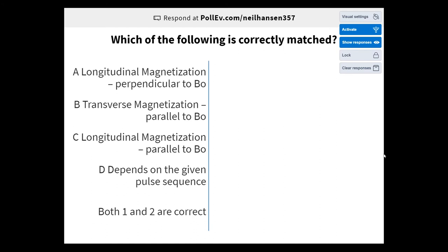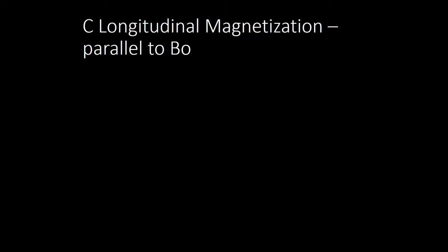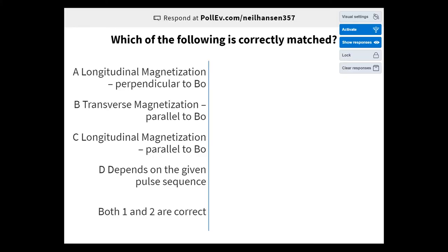Question: which of the following is correctly matched? The correct answer is longitudinal magnetization, which is parallel to B0. Transverse magnetization is perpendicular to B0. Longitudinal magnetization is parallel to B0, and it does not depend on the given pulse sequence — those two are constants.